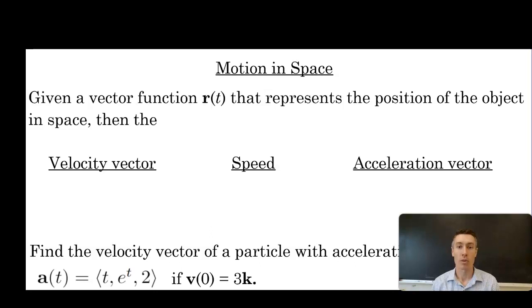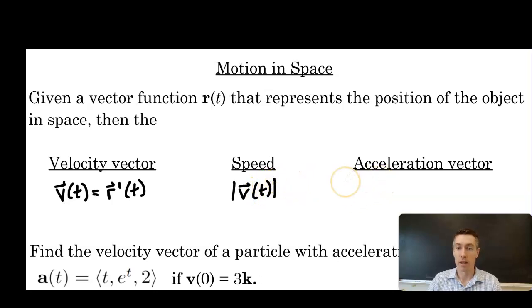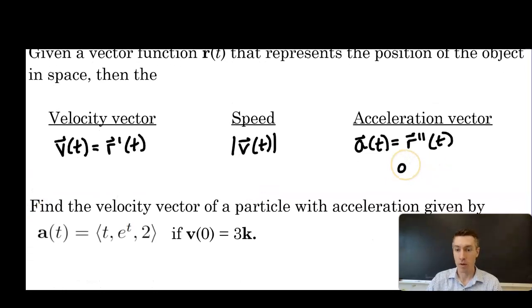Let's start with the basics. Given a vector function r of t that represents the position of the object in space, the velocity vector v of t is equal to the first derivative r prime of t. Speed will be the magnitude of the velocity vector function. And acceleration a of t will be the second derivative r double prime of t, or we can define that as the first derivative of velocity.